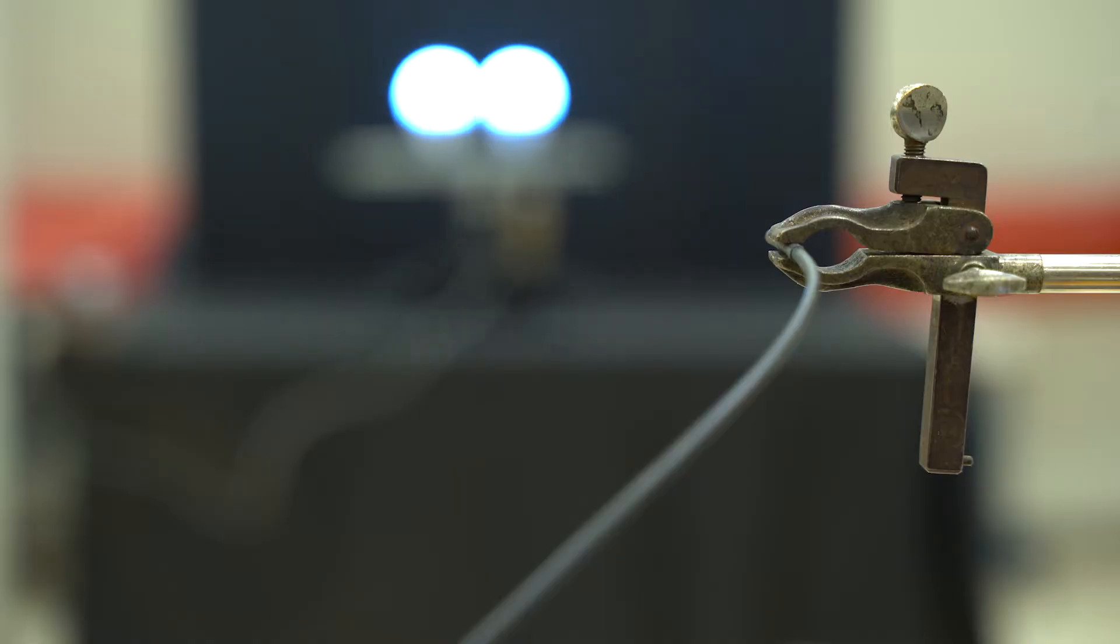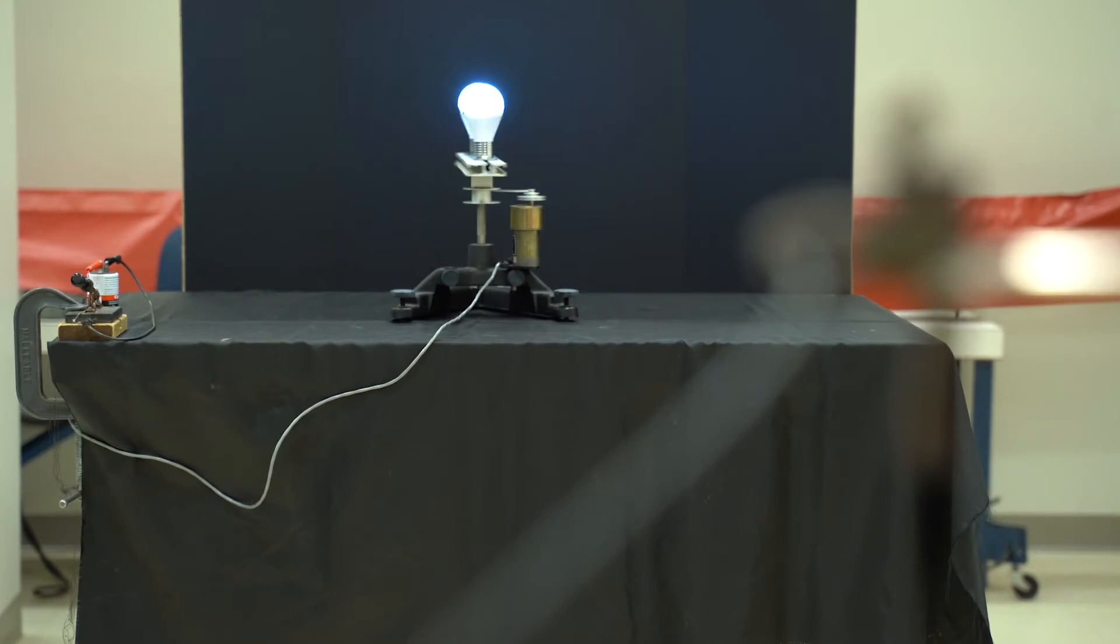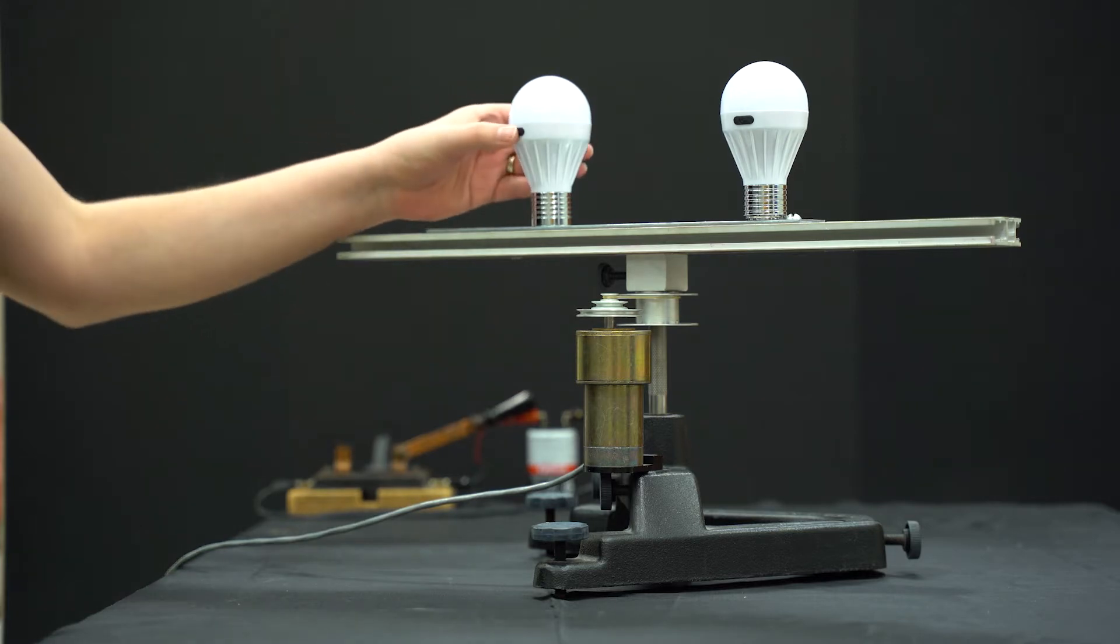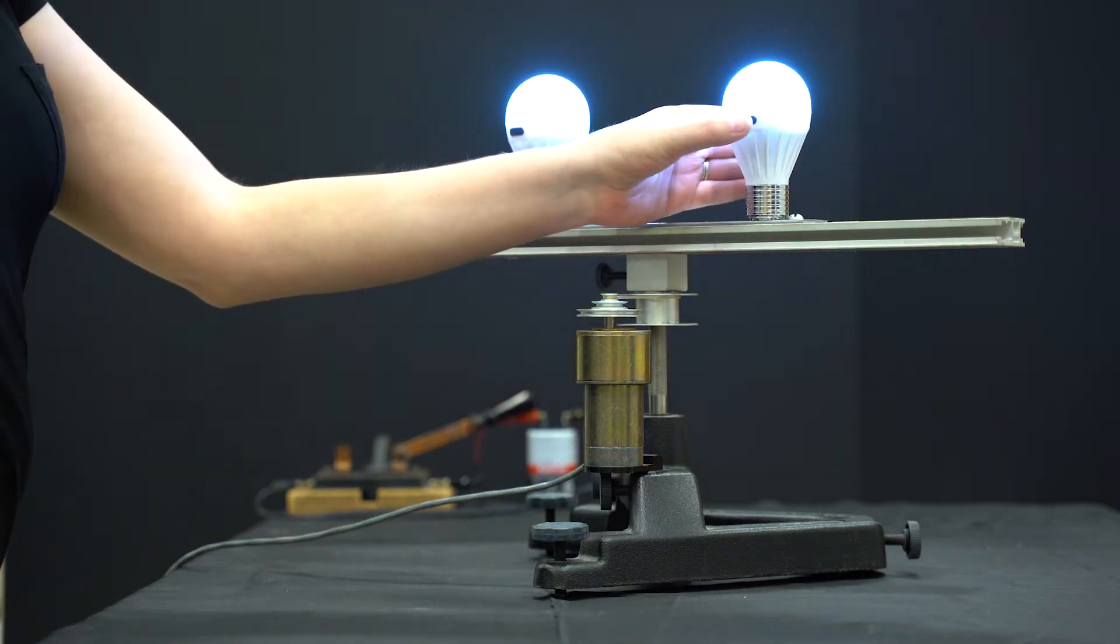Our fiber optics cable is pointing directly at the eclipsing binary bulb system. We have made sure that all other light sources in the room are extinguished. We turn on both bulbs at the higher setting and send power to the rotating platform.